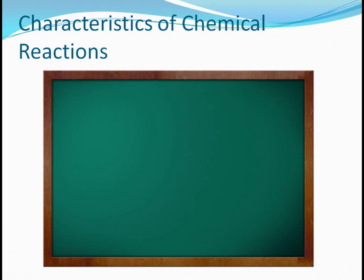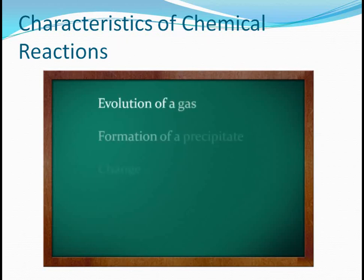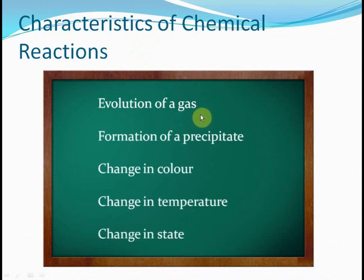Now there are some characteristics of chemical reactions. If some change is taking place, how can you make out that it's a chemical reaction? Generally we have certain characteristics to identify them. Evolution of a gas tells us that a chemical reaction is taking place. Sometimes formation of a precipitate tells us a chemical reaction is taking place. Sometimes the color of the substance changes, and then you understand that a chemical reaction is occurring.